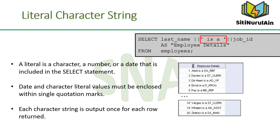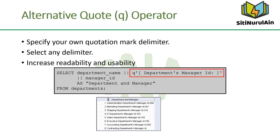A literal is a character, a number, or a date that is included in the SELECT statement. Date and character literal values must be enclosed within single quotation marks. Each character string is output once for each row returned. The example displays last names and job codes of all employees, with the column heading 'Employee Details'. Note that spaces between the single quotation marks improve the readability of the output. The last name and salary for each employee are concatenated with a literal to give the returned rows more meaning. If the literal itself contains a single quotation mark, you can use the quote operator and select your own quotation mark delimiter — single byte, multibyte, or any of the following character pairs.